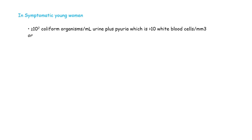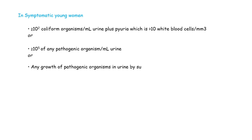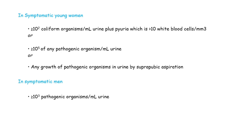The following criteria can be used as a guide for the diagnosis of UTI. In symptomatic young women: ≥10² coliform organisms per milliliter of urine plus pyuria (more than 10 white blood cells per cubic millimeter), or ≥10⁵ of any pathogenic organisms per milliliter of urine, or any growth of pathogenic organisms in urine by suprapubic aspiration. In symptomatic men: ≥10³ pathogenic organisms per milliliter of urine. In asymptomatic patients: ≥10⁵ pathogenic organisms per milliliter of urine on two occasions.